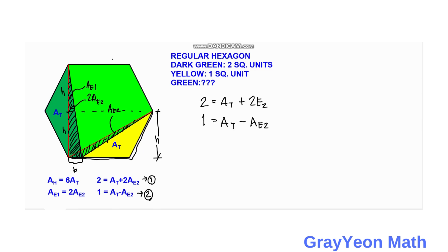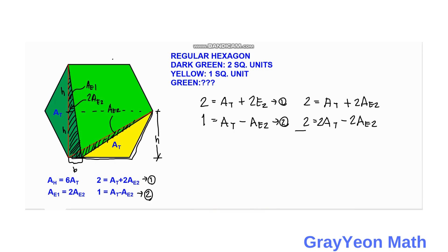We now use these two equations to solve for area E2. Multiplying equation 2 by 2 and adding it to the first equation, the T terms cancel out. We get 4 equals 3 times area E2, so area E2 equals 4 thirds square units.